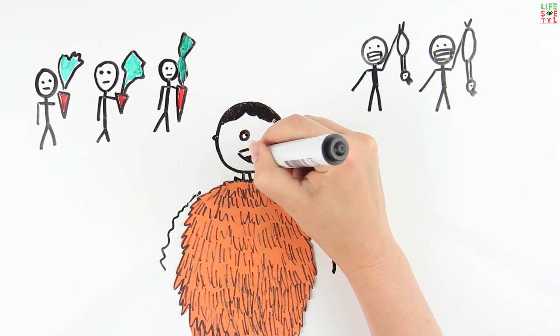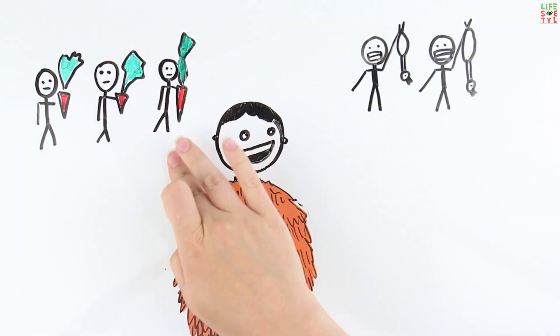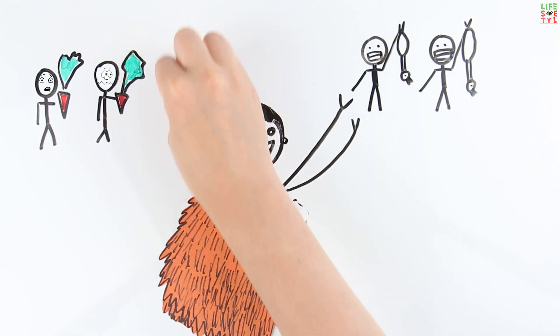Did you choose the meat eaters? Good choice. Soon the herbivorous Australopithecus becomes a dead branch of evolution and dies out.